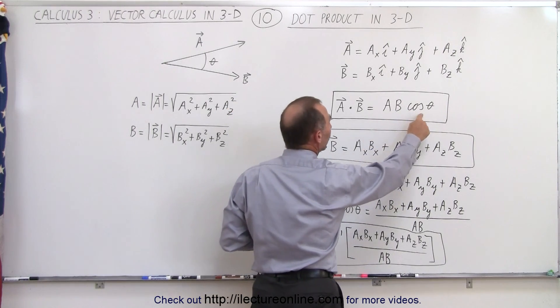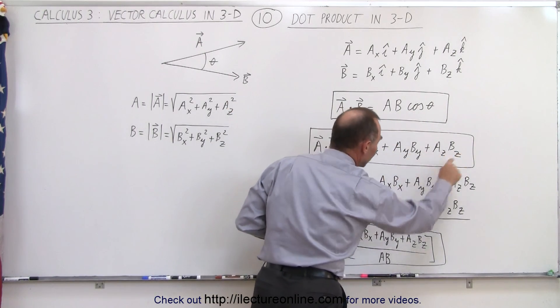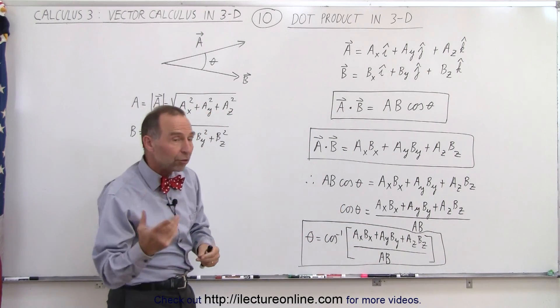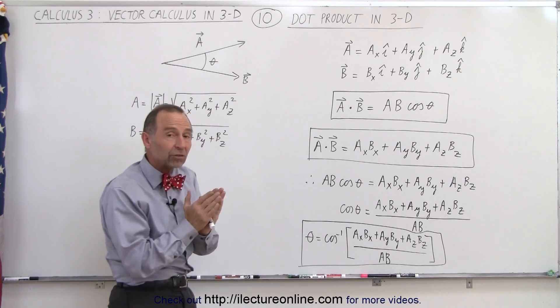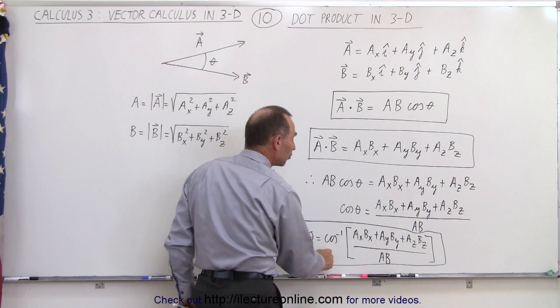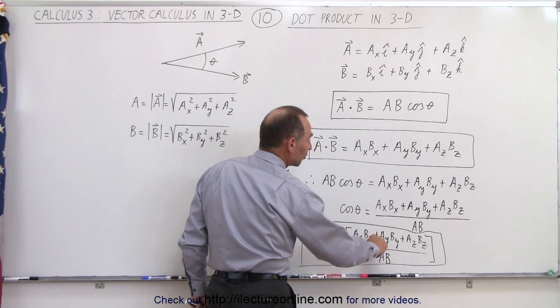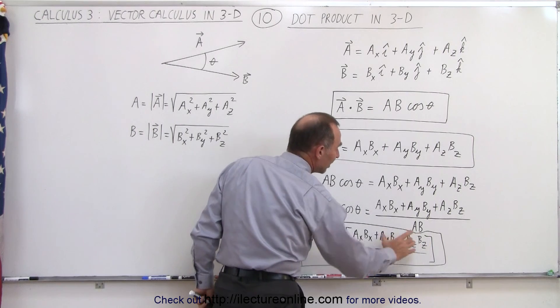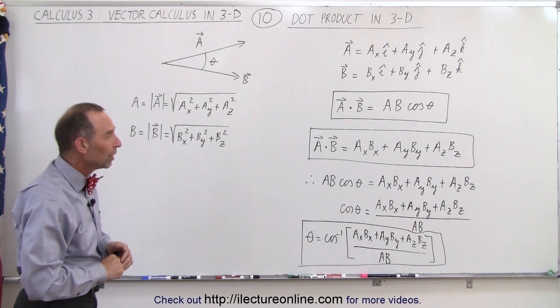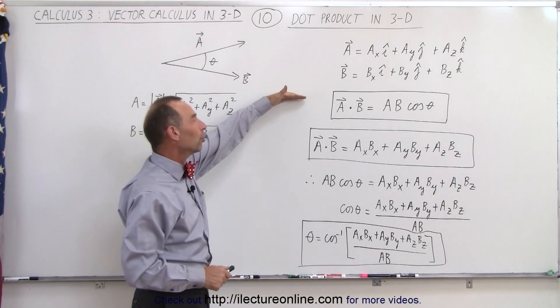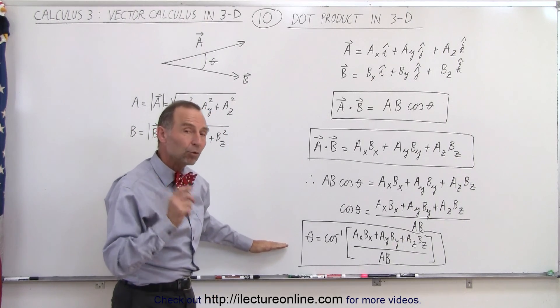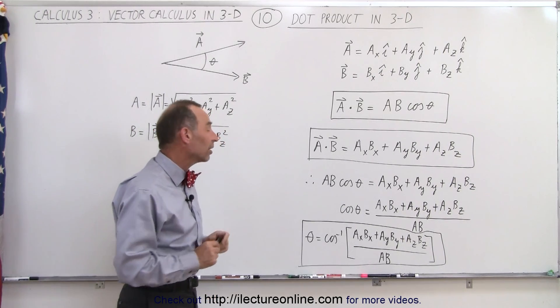We can then write that AB times the cosine of theta is equal to this. And then if we solve this for theta, we now have a third equation that allows you to find the angle between two vectors using the two definitions of the dot product. So the angle is equal to the inverse cosine of Ax Bx plus Ay By plus Az Bz divided by the magnitude, the product of the magnitudes of A and B. So those are three very important equations, two different ways of finding the dot product, and the third way to find the angle between the two vectors if the angle is not known.